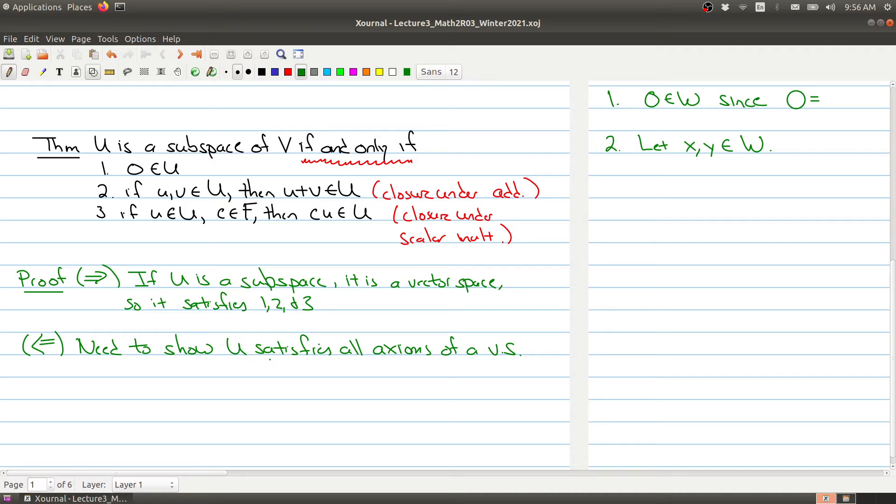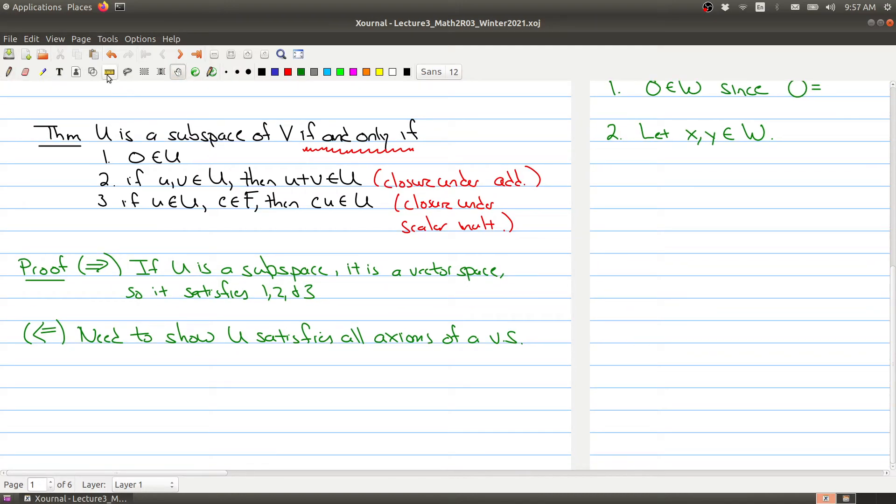We have to show that if U satisfies all the axioms of a vector space. Sorry, we need to show that U satisfies all the axioms of a vector space. So what do we have to note? Well, note that there's a bunch of properties of a vector space that it doesn't really matter if we're talking about elements inside of U or elements inside of V. These will always hold.